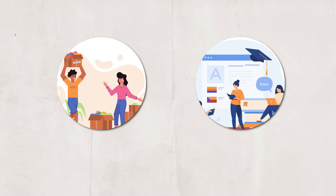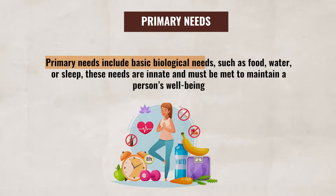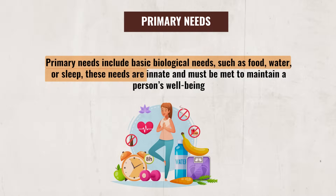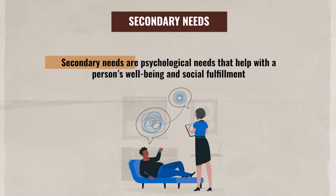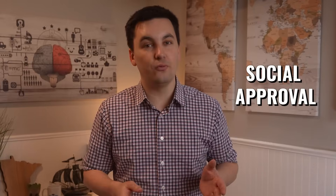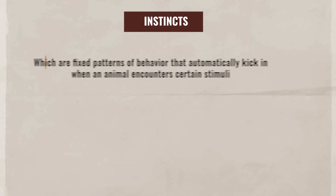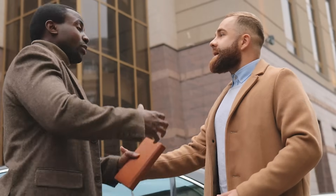Generally, people are motivated to fulfill their primary or secondary needs. Primary needs include basic biological needs such as food, water, or sleep — these needs are innate and must be met to maintain a person's well-being. Secondary needs, on the other hand, are psychological needs that help with a person's well-being and social fulfillment, such as social approval, love, and a sense of belonging. Both humans and animals are motivated for different reasons. Non-human animals often rely on instincts, which are fixed patterns of behavior that automatically kick in when an animal encounters certain stimuli, whereas human behaviors and mental processes are generally more complex, not just relying on instinctual responses.